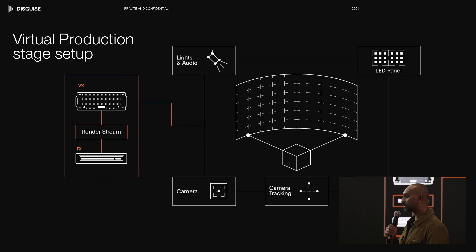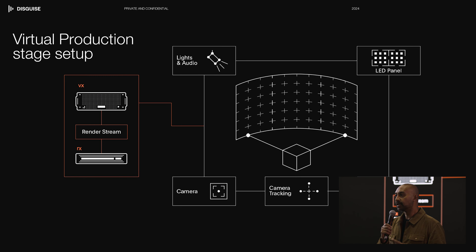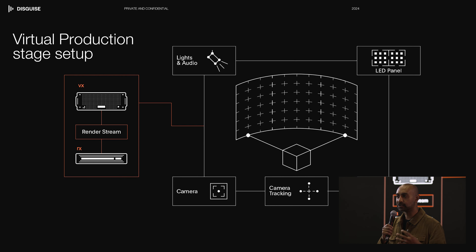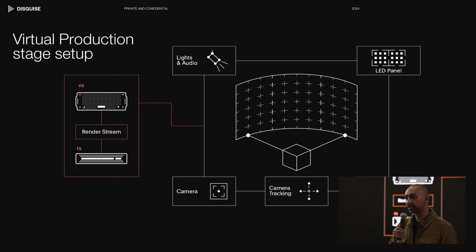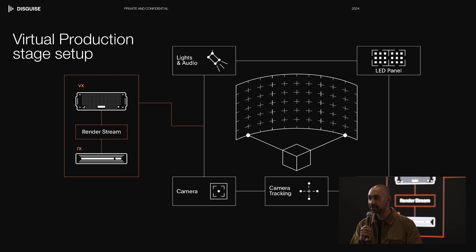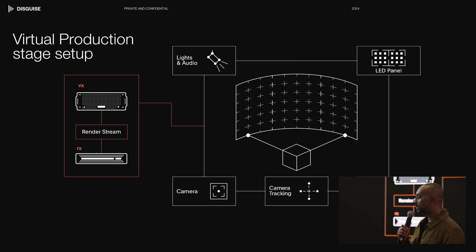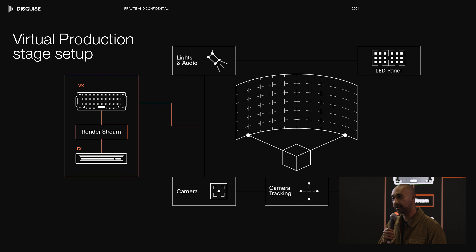Together with those two, in general a virtual production studio can be powered by many types of LED panels, many types of processors, camera tracking technology, and underneath all of it is the Disguise platform that is powering it.